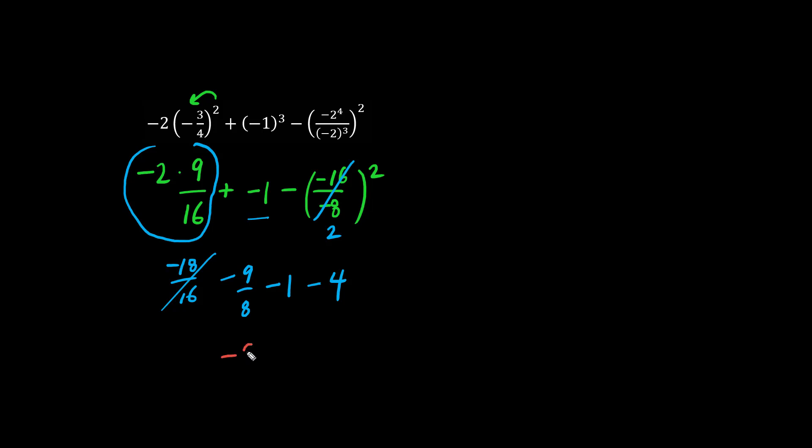And we now have minus 9 over 8, minus 5, or 5 over 1. Multiplying top and bottom by 8, we have 8 times 5 is 40. Negative 9 minus 40 is minus 49 over 8.